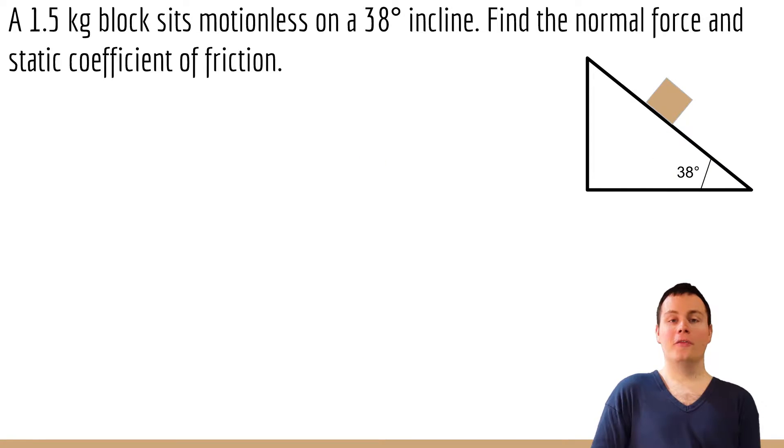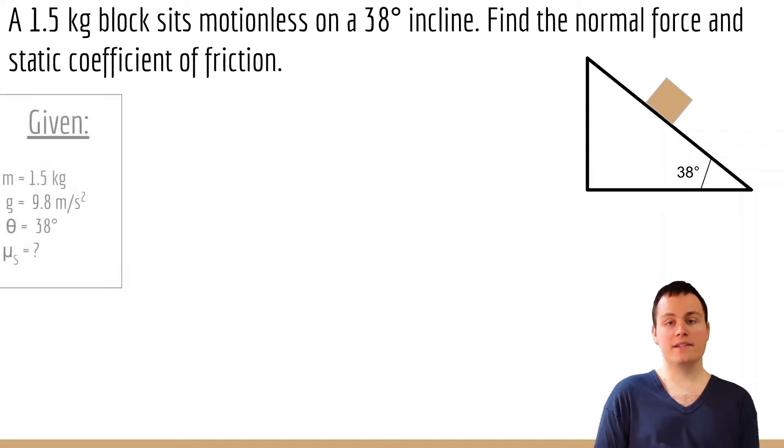Welcome back. Hopefully that wasn't too bad. First thing I did to solve for this was I wanted to make sure I wrote out all of my known variables. In this case we know the mass, we know the acceleration due to gravity, and we know that we're on a 38 degree angle. It says that there must be friction, and we know that the overall acceleration of the block is zero because it's sitting there motionlessly.